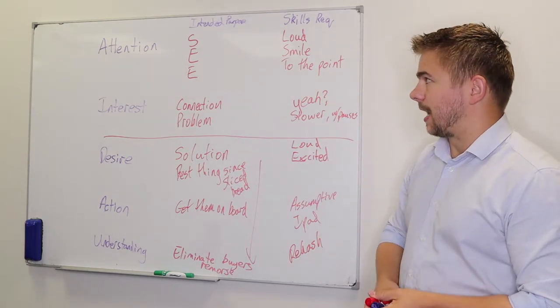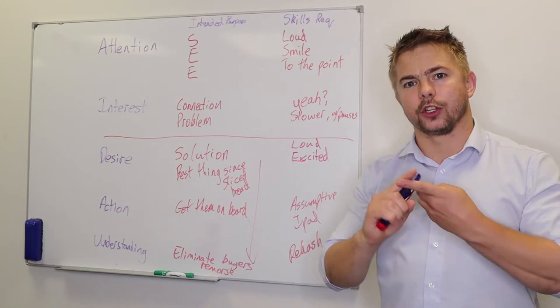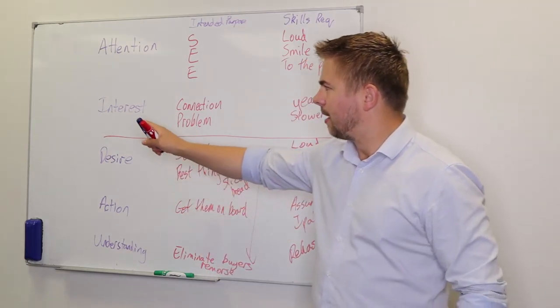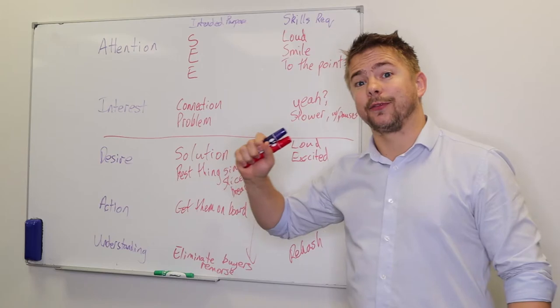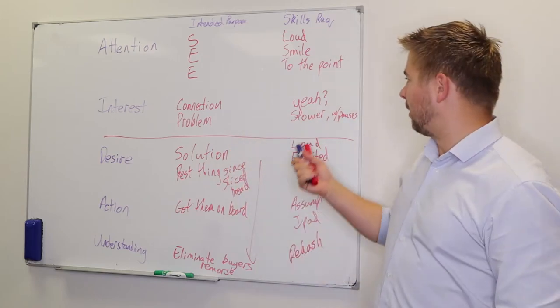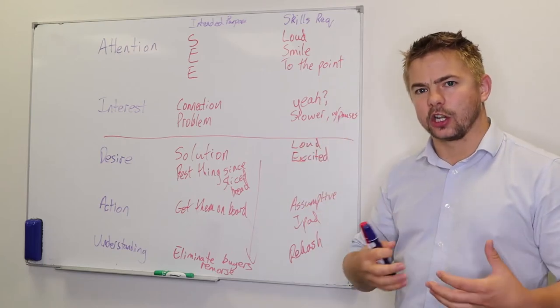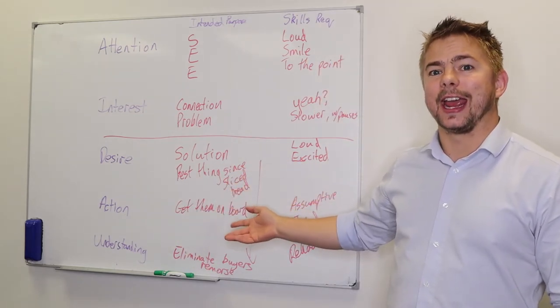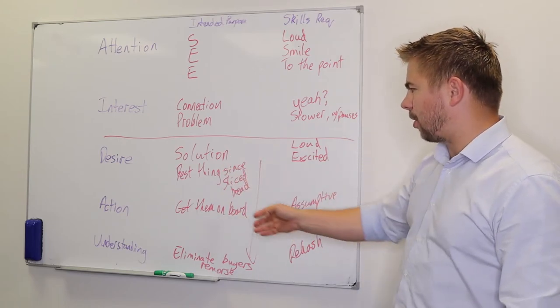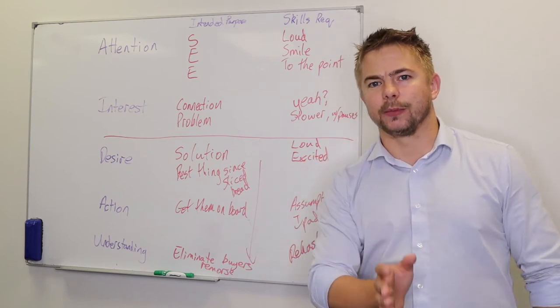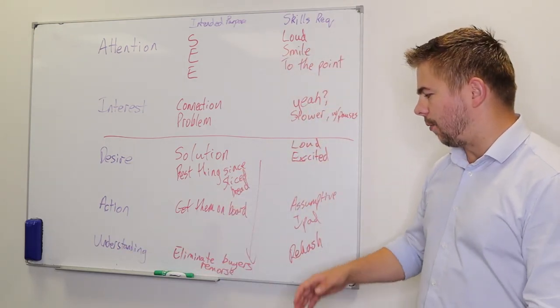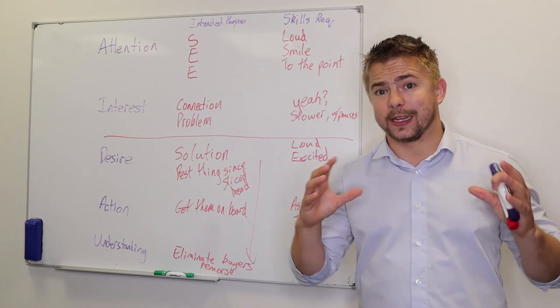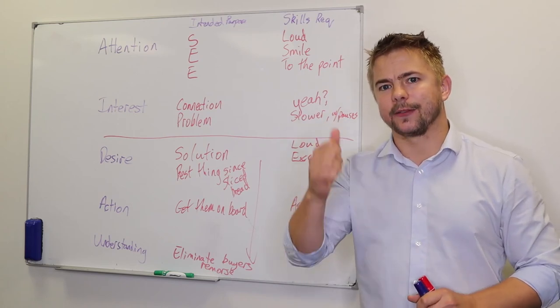That is the five steps to a presentation. To begin with, you grab their attention in the first four seconds by showing you're sharp as a tack, enthusiastic as hell, and an expert in your field. Do that by being loud, smiling, and getting to the point. Then get them interested by giving them a problem and making a connection so they feel it's their problem. Do that by asking yeah questions back and forth, being slower, and having pauses. Then the desire and action: give them the solution, show what they can get on board with, and actually get them on board. Do that by being loud and excited, showing it's the best thing since sliced bread, and being assumptive. Then the understanding part: eliminate their buyer's remorse by using good questioning skills, building rapport afterwards, and concluding everything up so they know exactly what they're getting on board for.